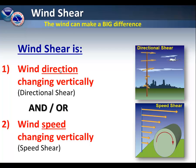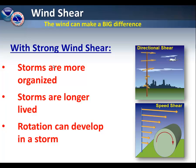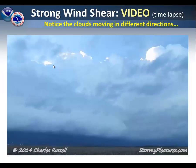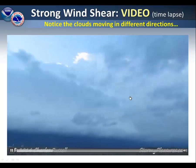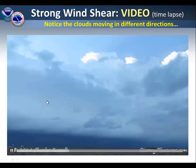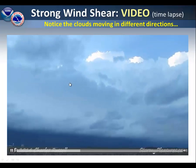Wind shear is a change in wind direction or wind speed as you go further up into the atmosphere. When wind direction changes, that is called directional shear, and when wind speed changes, that is called speed shear. With strong wind shear, storms tend to be more organized and also tend to be longer lived. Rotation can also develop in a storm when you have strong wind shear. In this particular example, notice that the clouds moving into the screen are moving from a different direction than the clouds higher up, which are moving from left to right. This is an example of directional and wind speed shear.